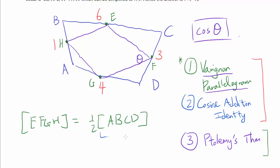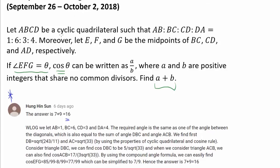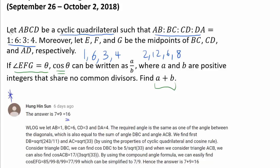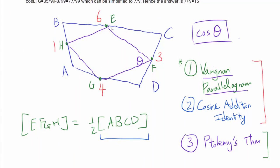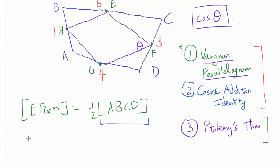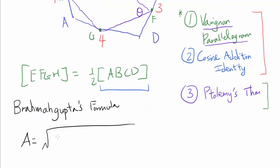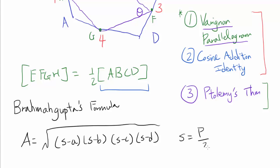How does this help us? We know how to find the area of ABCD because it is a cyclic quadrilateral with given side lengths. We can treat the side lengths as 1, 6, 3, and 4, since cosine of theta will be the same regardless of the scale factor. There is a nice formula called Brahmagupta's formula: the area of a cyclic quadrilateral is the square root of (s−a)(s−b)(s−c)(s−d), where s is the semi-perimeter.